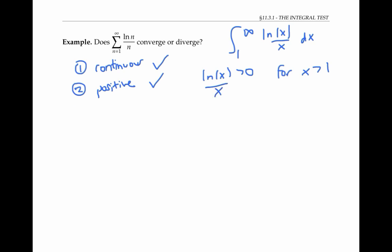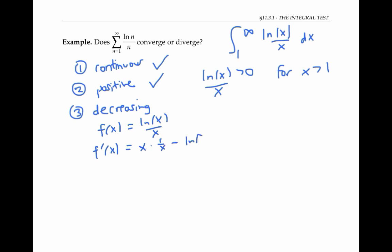Finally, let's check if our function is decreasing. One way to do that is to look at the derivative. If f of x is ln x over x, then by the quotient rule, f prime of x is x times one over x minus ln x times one, all over x squared. This simplifies to one minus ln x over x squared.